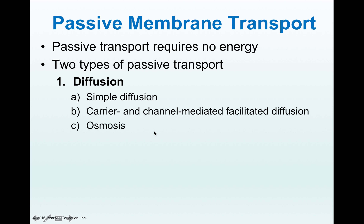Passive transport has three main categories known as simple diffusion, carrier or channel-mediated facilitated diffusion, and osmosis. So let's start talking about the concept of diffusion.